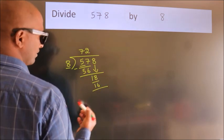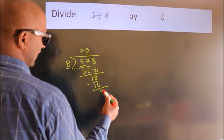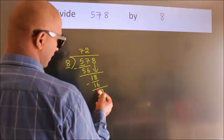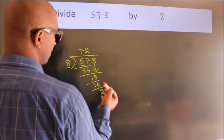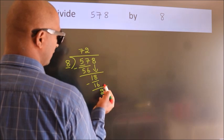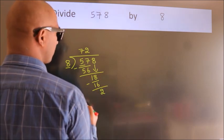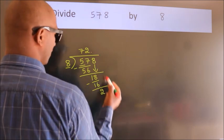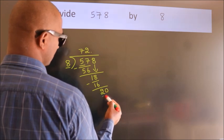Now we subtract. We get 2. After this, no more numbers to bring it down. So what we do is we put dot, take 0. So 20.